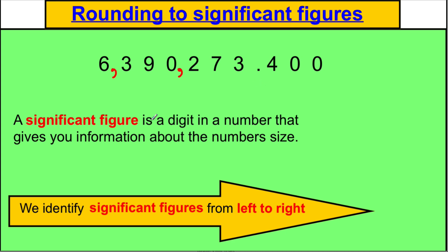Now a significant figure is a digit in a number. So it's one of the digits in this number that gives you information about the number's size. And we identify significant figures from the left to the right. We go that way.